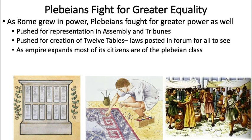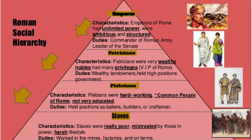The plebeians did fight for more power as Rome grew. Their power definitely grew — they pushed for representation in the assemblies and tribunes, and pushed for the creation of the Twelve Tables, posted in the forum for all to see so everyone could know what the laws were. As the empire expanded, most new citizens were of that plebeian working class. I found a social pyramid graphic organizer that shows the whole structure of Roman society during the empire: the emperor at the top, then powerful magistrates, consuls, and senators, down into the patricians — the VIPs of Rome — then the plebeians, and finally at the bottom the slaves, working in the worst conditions.